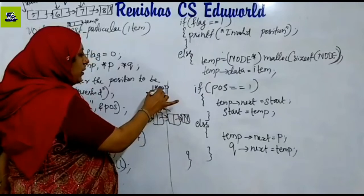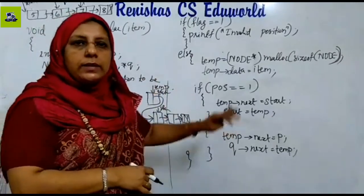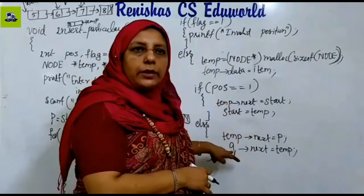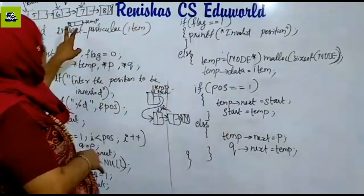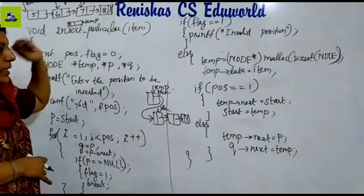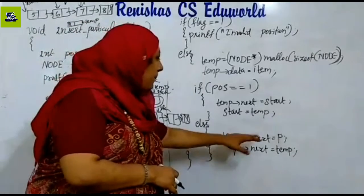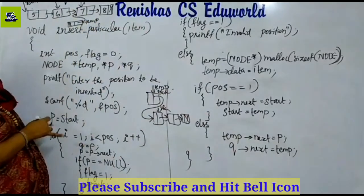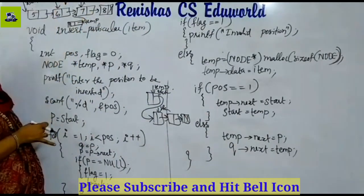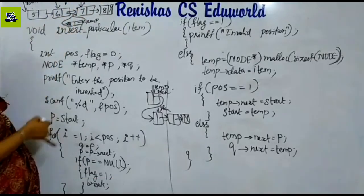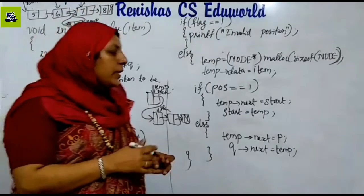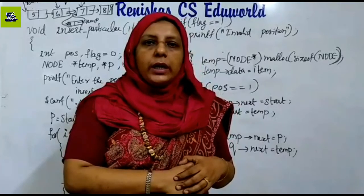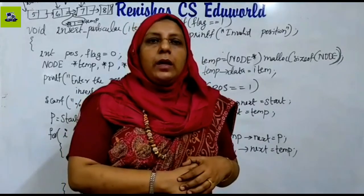When we proceed to the next step: temp->next equals start, and start equals temp for the first position. Then for inserting between P and Q: temp->next equals P->next, completing the insertion at the particular position.